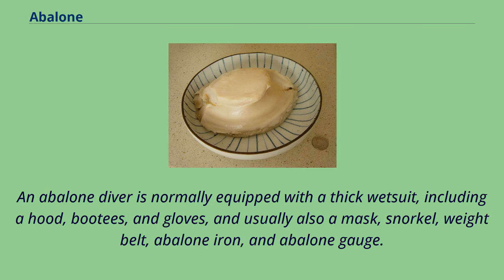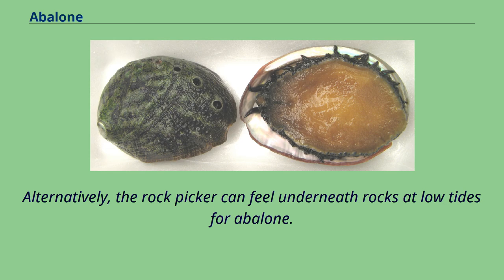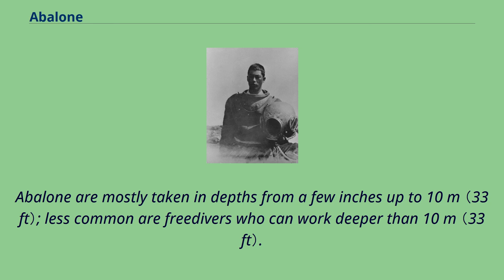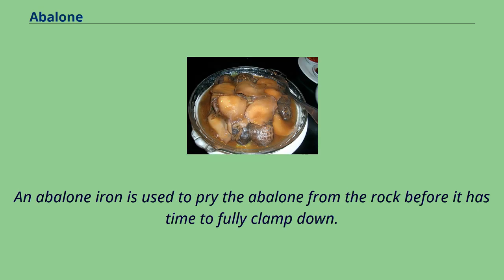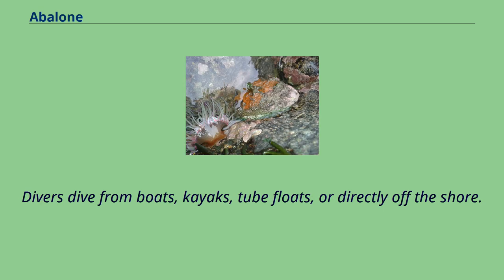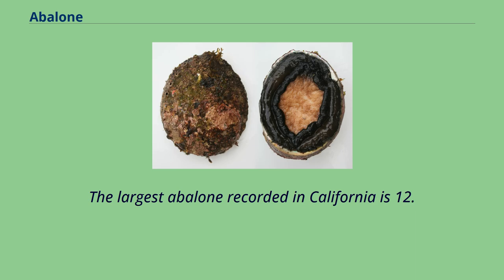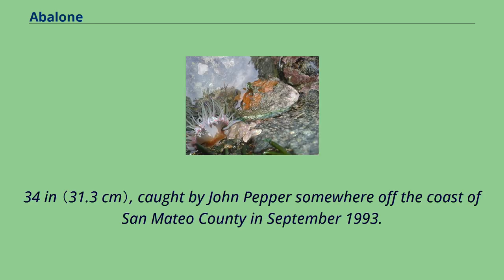An abalone diver is normally equipped with a thick wetsuit including a hood, booties, and gloves, and usually also a mask, snorkel, weight belt, abalone iron, and abalone gauge. Alternatively, the rock picker can feel underneath rocks at low tides for abalone. Abalone are mostly taken in depths from a few inches up to 10 meters, with less common freedivers who can work deeper than 10 meters. Abalone are normally found on rocks near food sources such as kelp. An abalone iron is used to pry the abalone from the rock before it has time to fully clamp down. Divers dive from boats, kayaks, tube floats, or directly off the shore. The largest abalone recorded in California is 12.34 inches, caught by John Pepper off the coast of San Mateo County in September 1993.